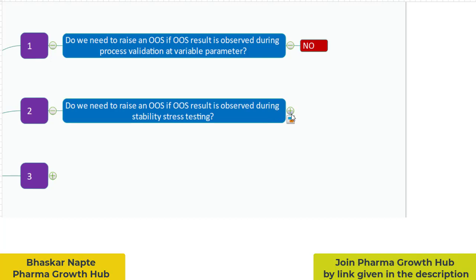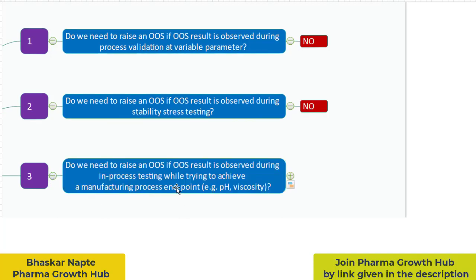Since this is not going to be an actual storage condition for the drug substance or product, such a failure in the stress specification need not be investigated through the out-of-specification procedure. This stress test study helps you understand the intrinsic stability of your API or drug product, and based on this information you can decide what formulation and container closure system you should have. The OAS result does not need to be investigated through the OAS procedure.